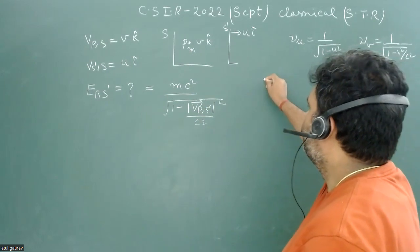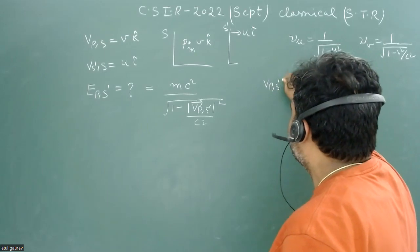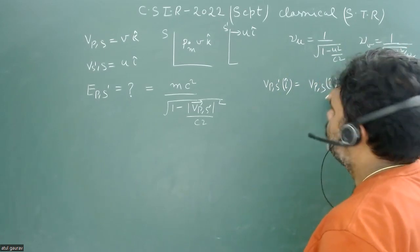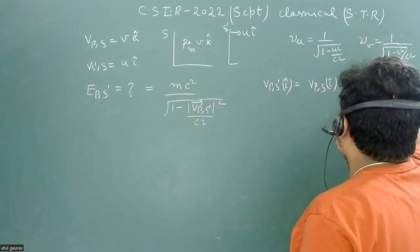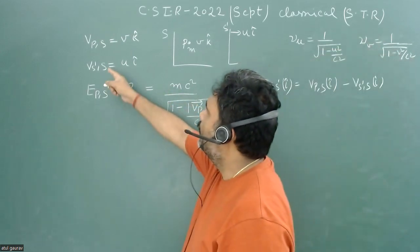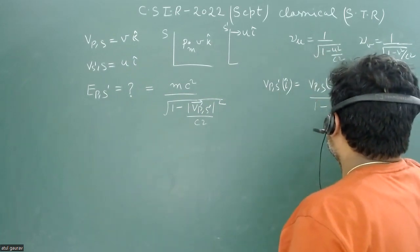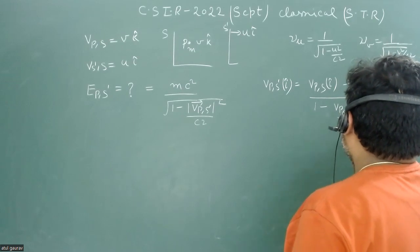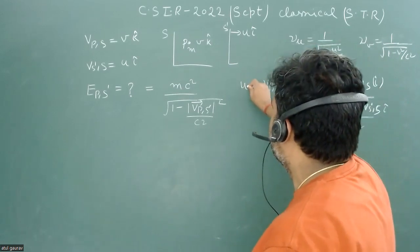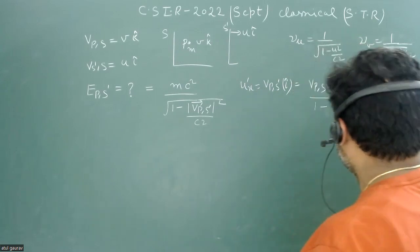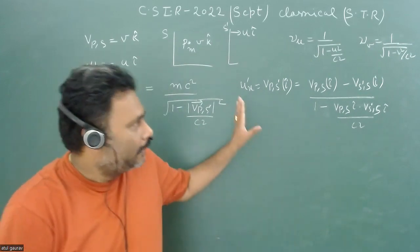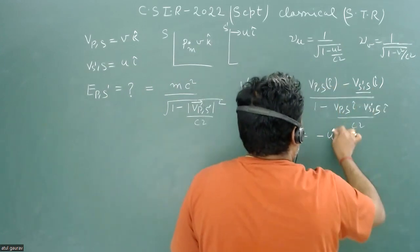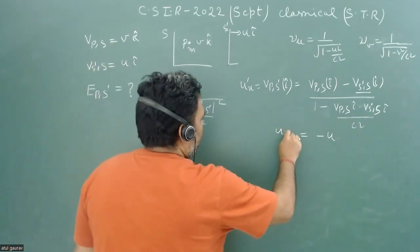The velocity of the particle with respect to S-dash in the i-cap direction is given by: (velocity of particle w.r.t. S in i-cap) minus (velocity of S-dash w.r.t. S in i-cap), divided by 1 minus their product over c². Since the particle's x-velocity is zero and S-dash moves at u, we get ux-dash = −u.